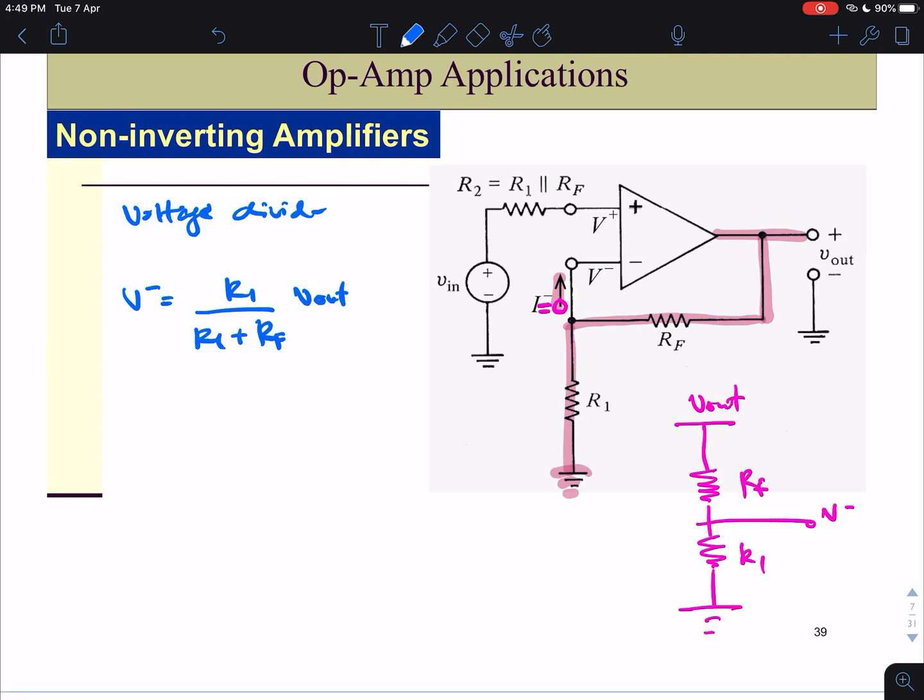We know that V minus equals to V plus equals to Vin. So now we have our Vin equals to R1 over R1 plus RF multiplied by V out.